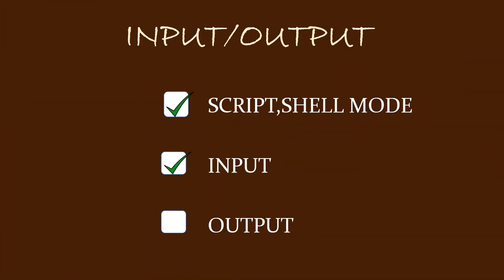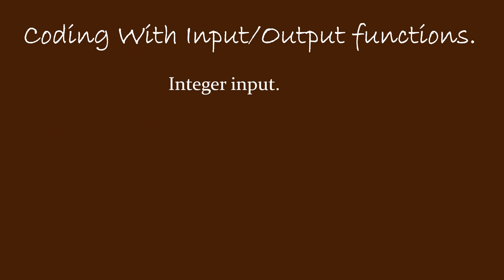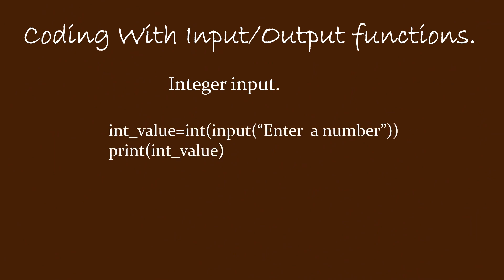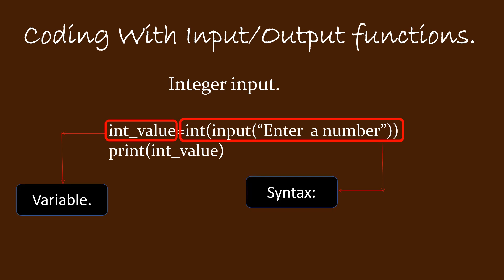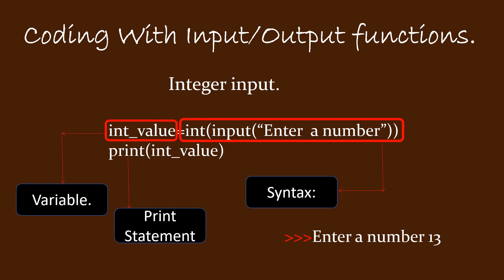Till here we are done with the modes, input, and output functions, and now we will see some basic input output codes — this will mark the starting of our coding in Python. The first example is to take an integer as input and print it. We take a variable int underscore value equal to int input open bracket double quote enter a number, and in the next line we have print int underscore value. When the program runs, the computer displays enter a number, and if you enter 13, the variable int value will contain 13, and when the print statement is executed the value 13 is displayed. Giving a message in a program is optional — the program runs perfectly even without it.